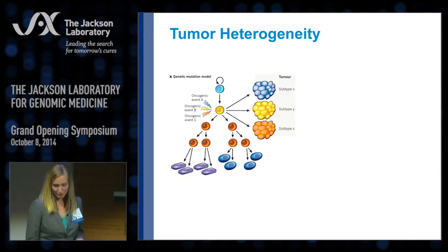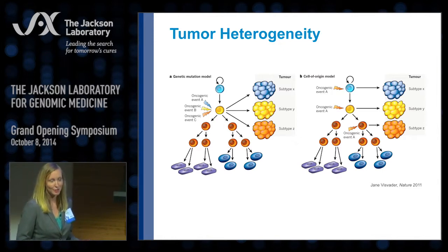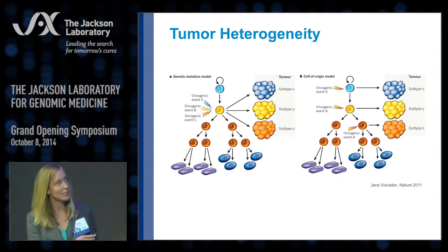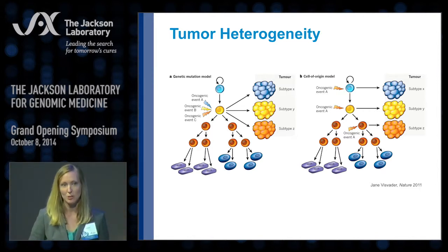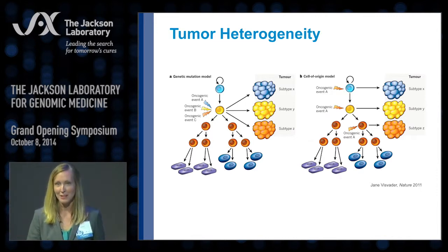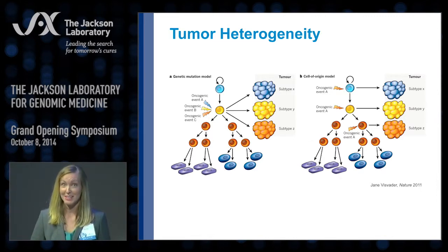A second model that my laboratory is interested in exploring is the cell of origin model, whereby identical oncogenic events can occur, but it is the identity of the cell type in which that event occurs that dictates the subtype of tumor that will form. We have genetic and genomic tools to investigate genetic mutations in a clinical setting, but we do not currently have the knowledge or tools to determine, for a patient presenting with a particular tumor, what was the cell of origin. This is where we're interested in developing new technologies.